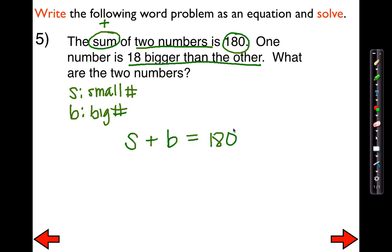There's an issue with this equation — it's one equation with two variables, which is very difficult to solve. So what I need to do is try to narrow it down to only use one variable. I like to keep the smaller value the way it is and manipulate the other one. So we're going to leave S alone, but for B, I'm going to rewrite it.